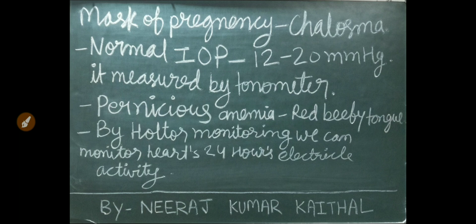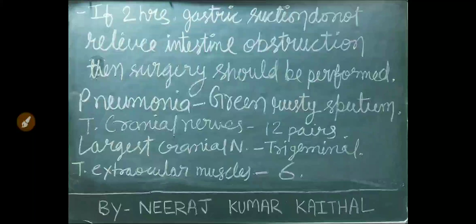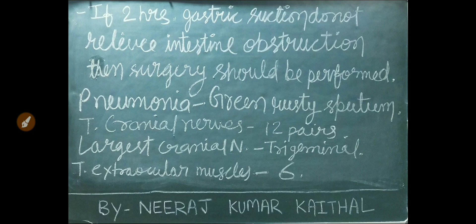In pernicious anemia, red beefy tongue is seen. By Holter monitoring, we can monitor the heart's 24-hour electrical activity. If 2 hours of gastric suction does not relieve intestinal obstruction, then surgery should be performed. In pneumonia condition, green-colored sputum is seen.